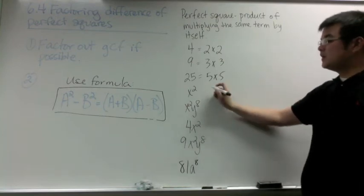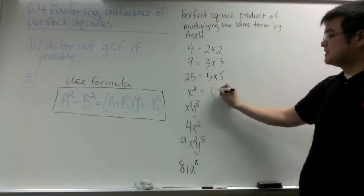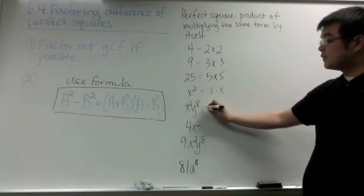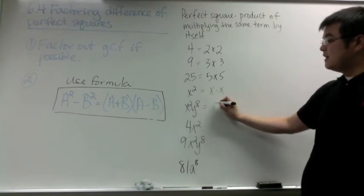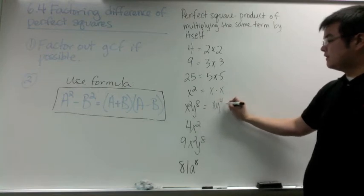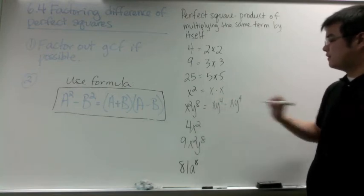x squared is a perfect square because of x times x. y to the 8th is a perfect square because of y to the 4th times y to the 4th.